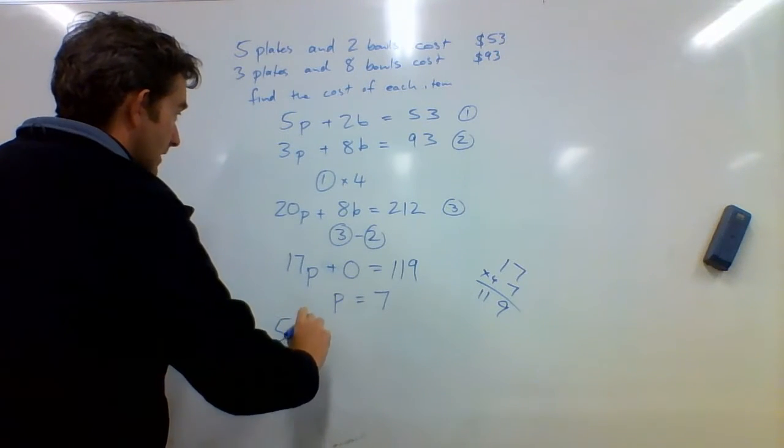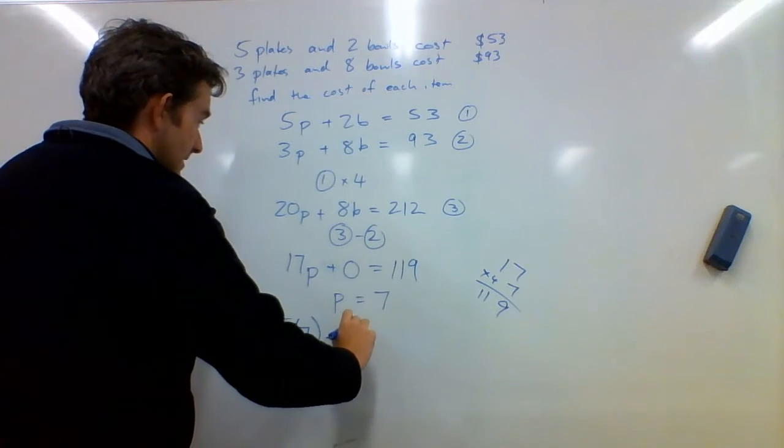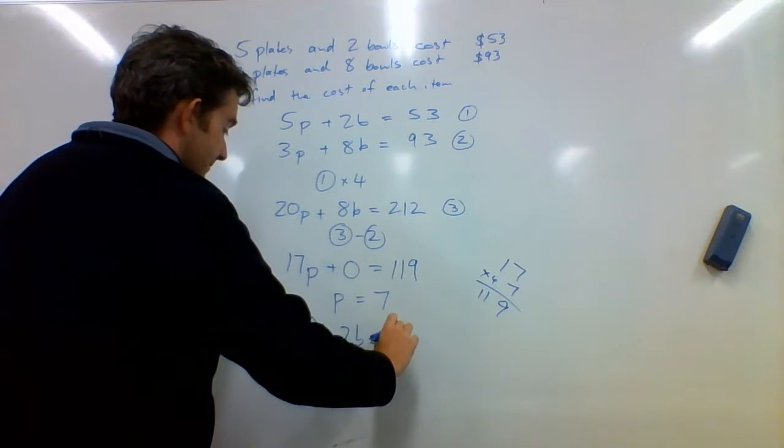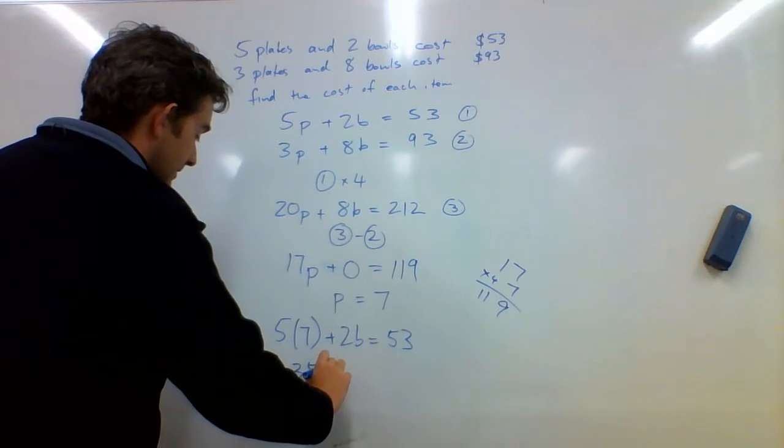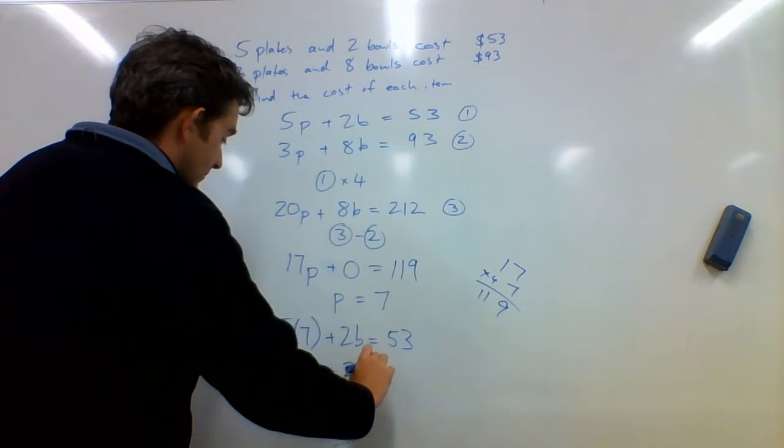So 5 times 7 plus 2b equals 53. So 35 plus 2b equals 53.